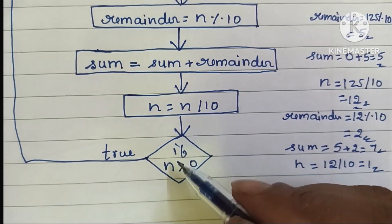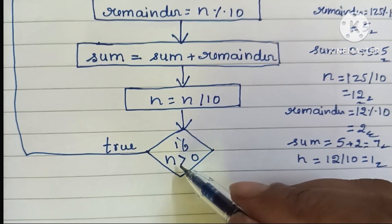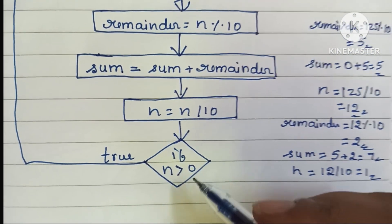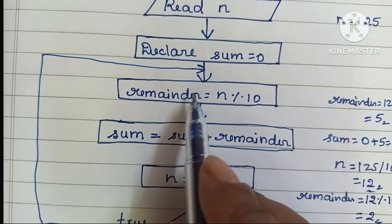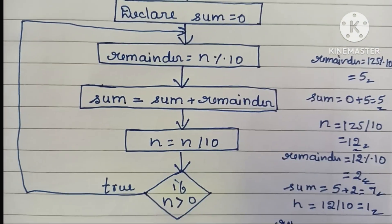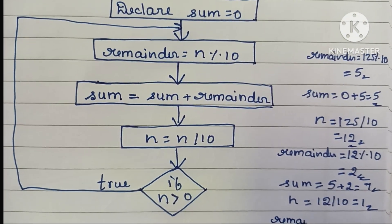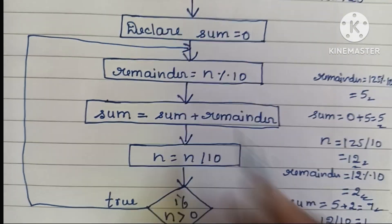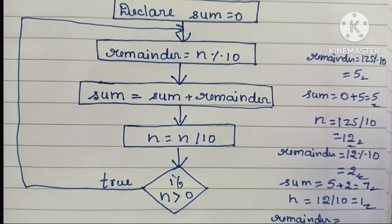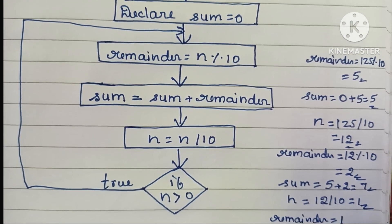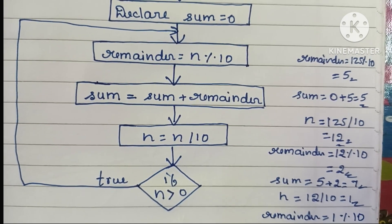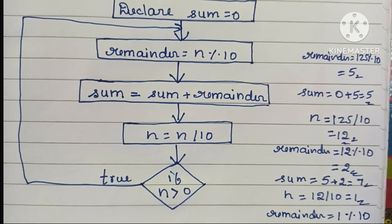Next, we calculate N: 12 divided by 10 gives N equal to 1. We check if N is greater than 0 — 1 is greater than 0, so it is true. We again calculate the remainder: N modulo 10, where N is 1, so remainder becomes 1.